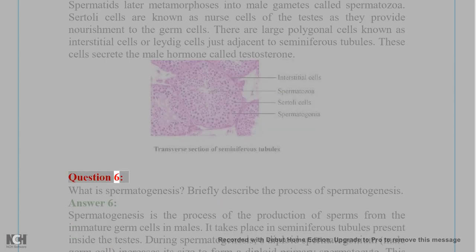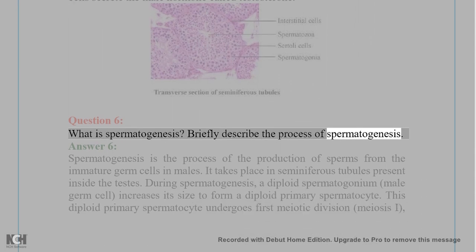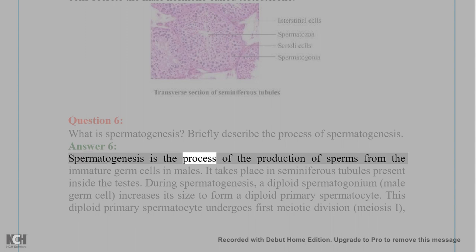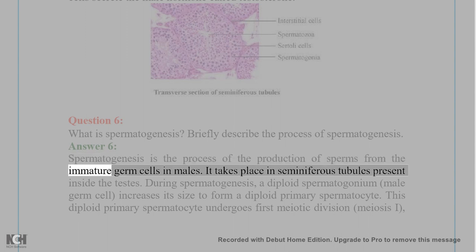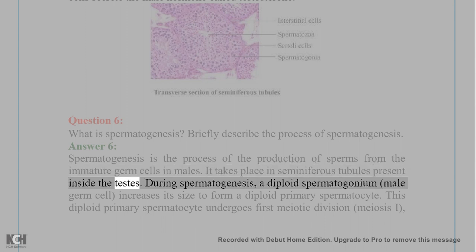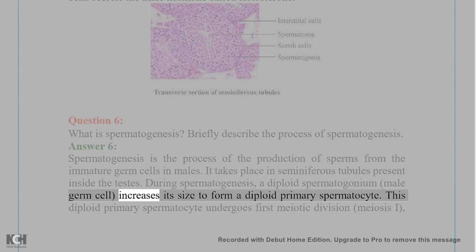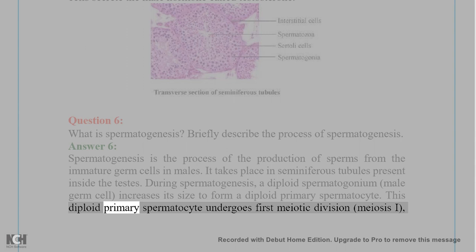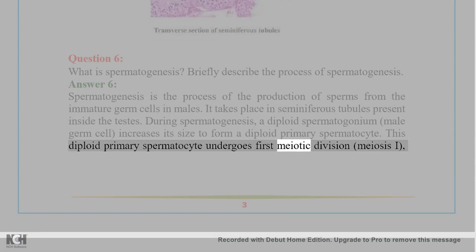Question 6: What is spermatogenesis? Briefly describe the process of spermatogenesis. Answer 6: Spermatogenesis is the process of the production of sperms from the immature germ cells in males. It takes place in seminiferous tubules present inside the testis. During spermatogenesis, a diploid spermatogonium (male germ cell) increases its size to form a diploid primary spermatocyte.